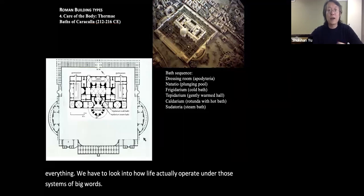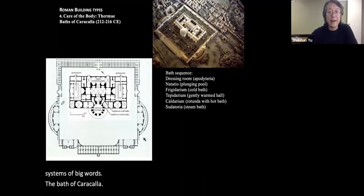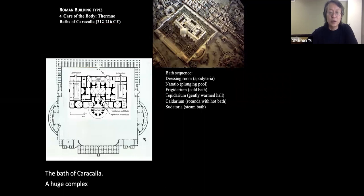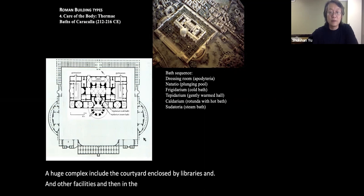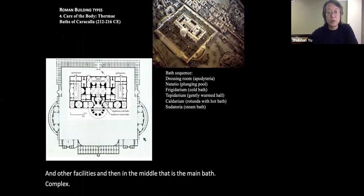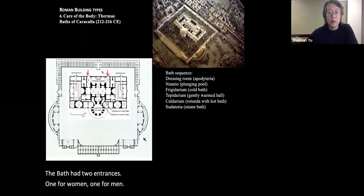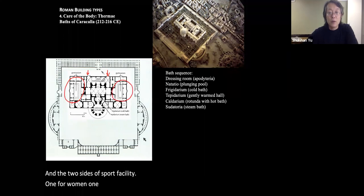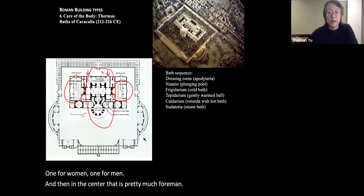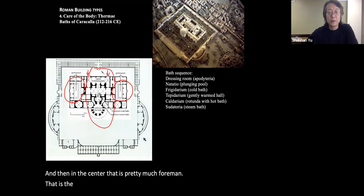The Bath of Caracalla was a huge complex including a courtyard enclosed by libraries and other facilities, with the main bath in the middle. The bath had two entrances — one for women and one for men — and two sides of sports facilities, one for each sex. The central bath area was primarily for men.